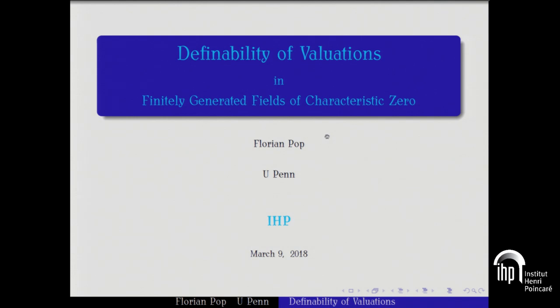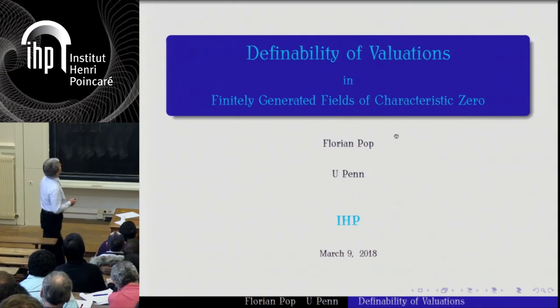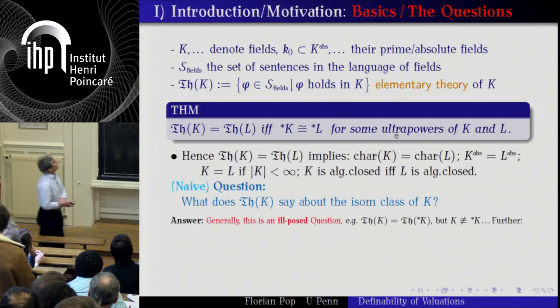Namely, it refers to — or stems from — the possibility of defining valuations in finitely generated fields of characteristic zero. And I will also embed this problem in the bigger context to which it belongs. Let's start with the beginning: first, introduction and motivation.